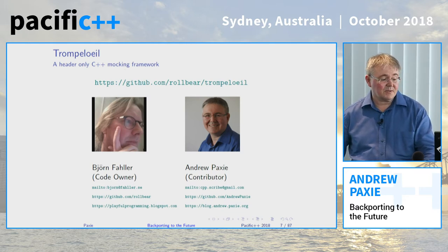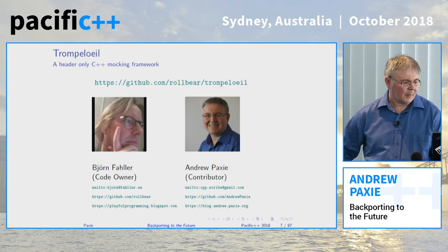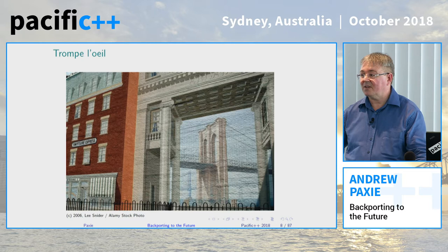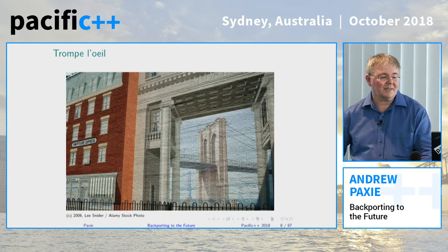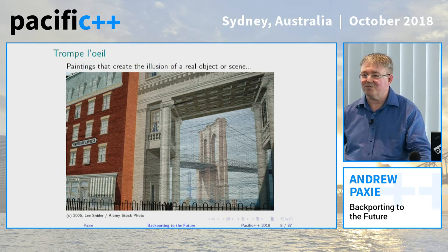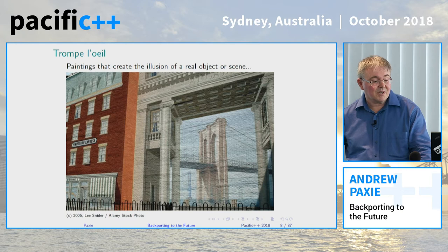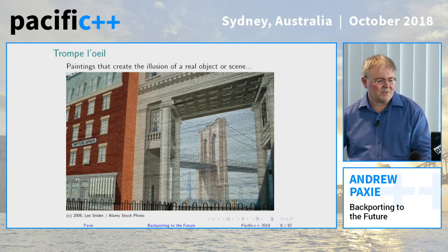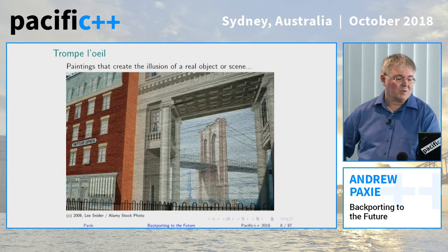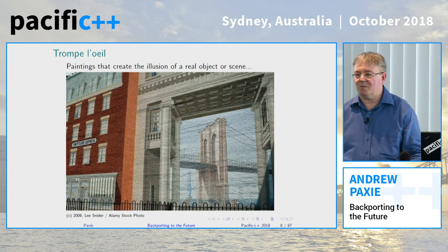I put my picture there because I've since become a contributor to this project for reasons you will find out during this talk. The name of the project is worth spending a few seconds on. I find it particularly apt that they use the term from art, Trompe-l'œil. It means to deceive the eye, quite literally. In art circles, they refer to paintings that create the illusion of real objects or a scene. I like this one particularly because it's a picture of the Brooklyn Bridge drawn on a building that blocks the Brooklyn Bridge when you're standing in that position in New York. Richard Haas drew that mural in 1978.